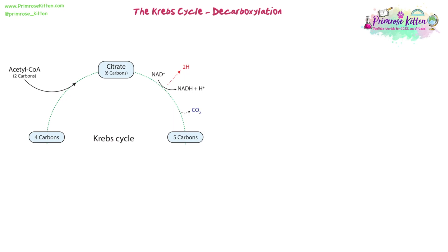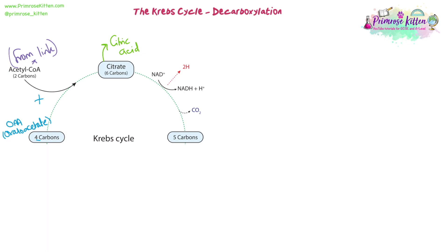So here is the first stage of our Krebs cycle. The molecule that we're going to need to combine with our acetyl-CoA, which has come from the link reaction, is called OAA or oxaloacetate, and it has four carbons. We obviously have our acetyl-CoA, which came from the link reaction, and we're going to add them together. So they combine to make this compound called citrate, which is six carbons. Citrate, or citric acid as it's sometimes known, is what this cycle is then named after.